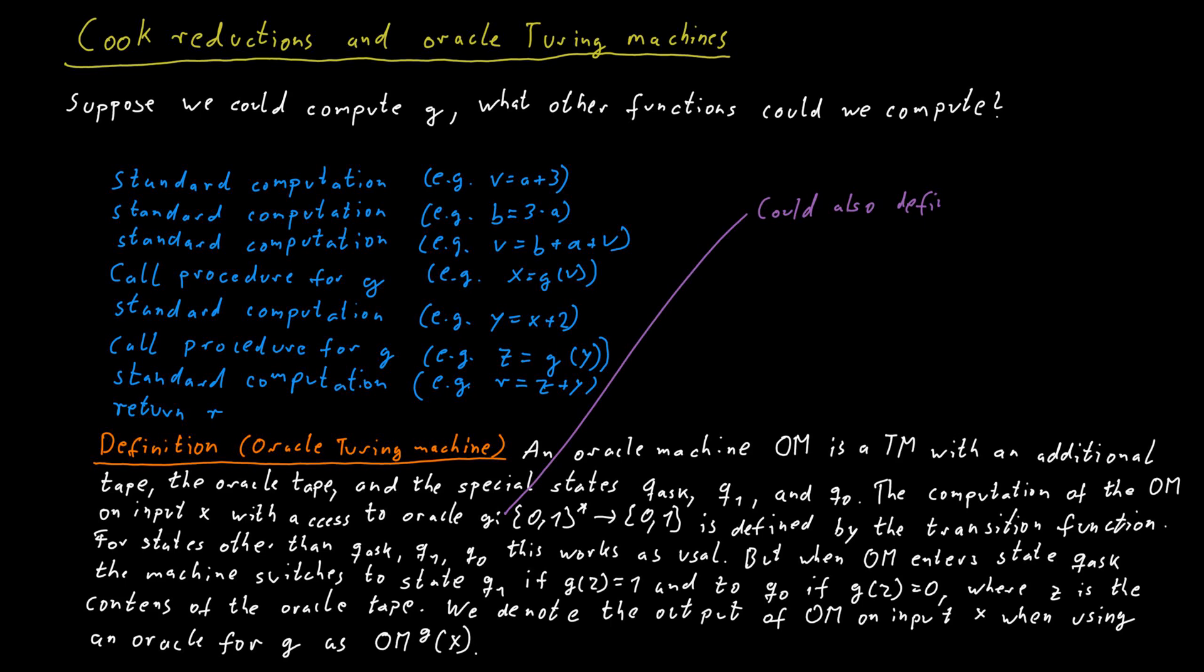A side note here is that we can also define Oracle machines in such a way that the Oracle is not necessarily a function that maps to zero or one, but it's a general problem. So the output could be a bit string rather than just a single bit. In that case, of course, it wouldn't be possible to give the answer by switching to an internal state q0 or q1. Instead, the answer would have to be written down in some special tape, and then the Oracle machine can read the answer from there. However, we will not really use such machines here. So this is just a side note that technically this is possible, but we will not need this.